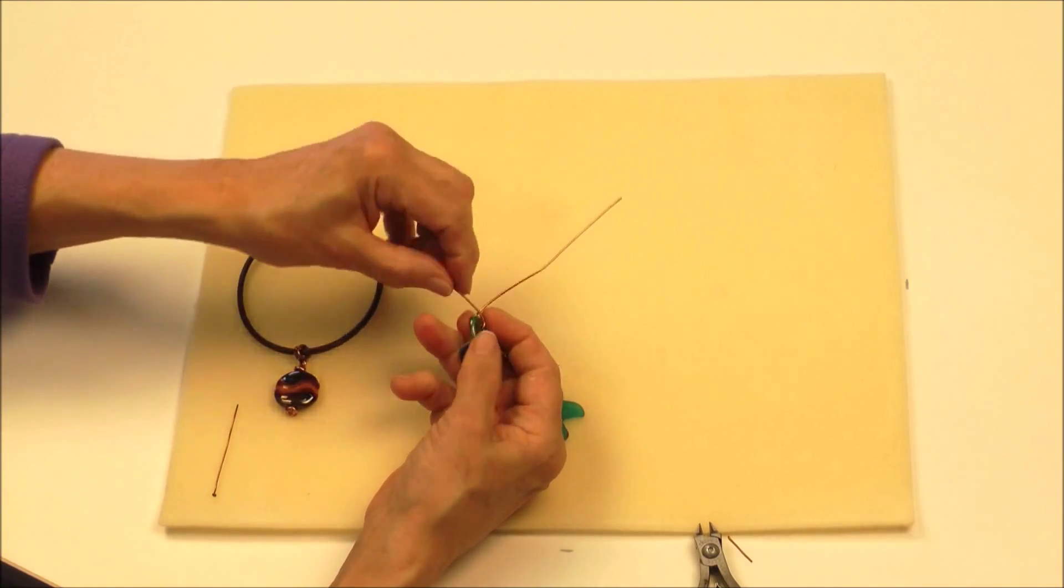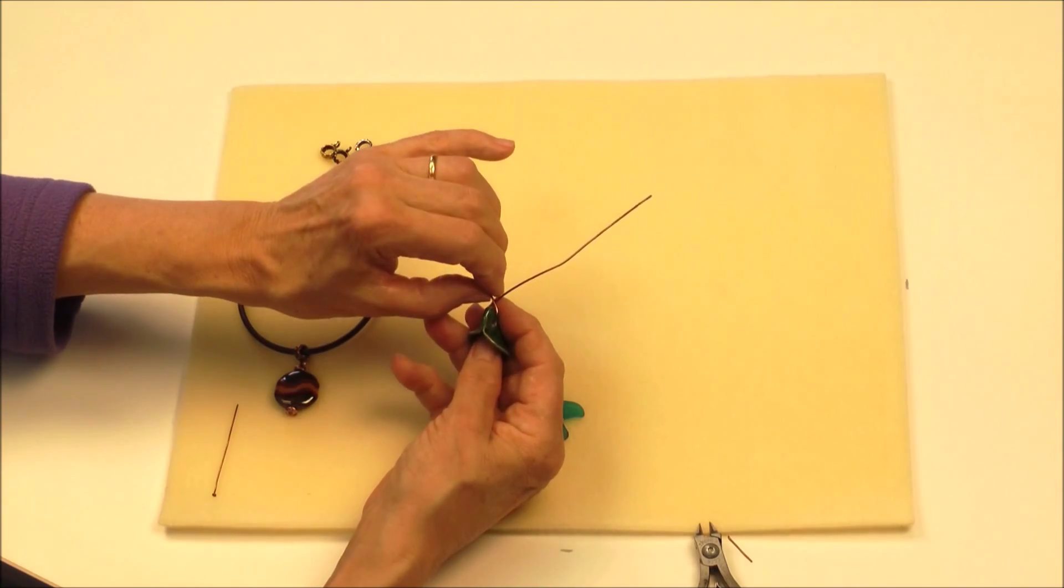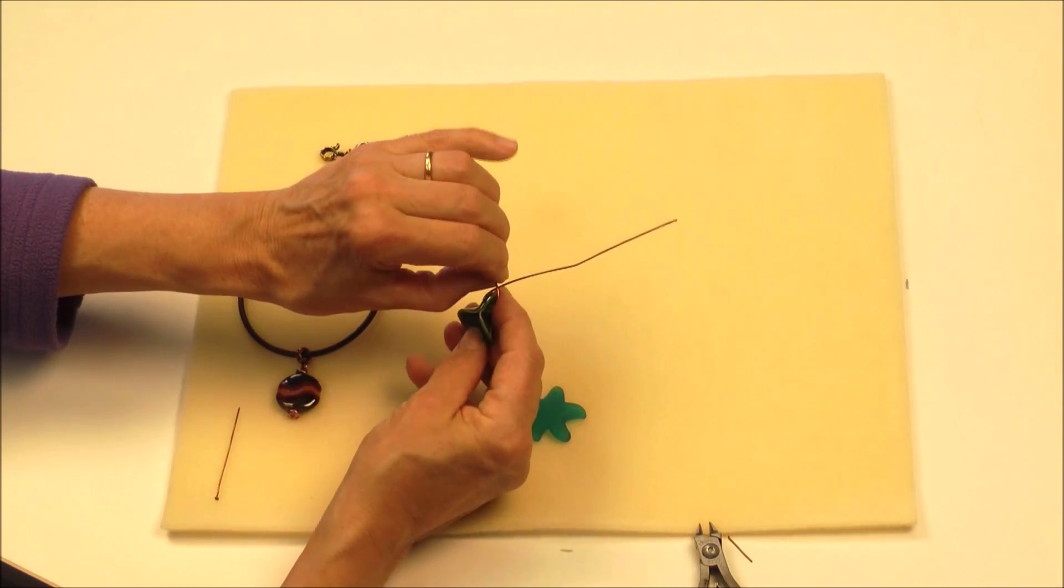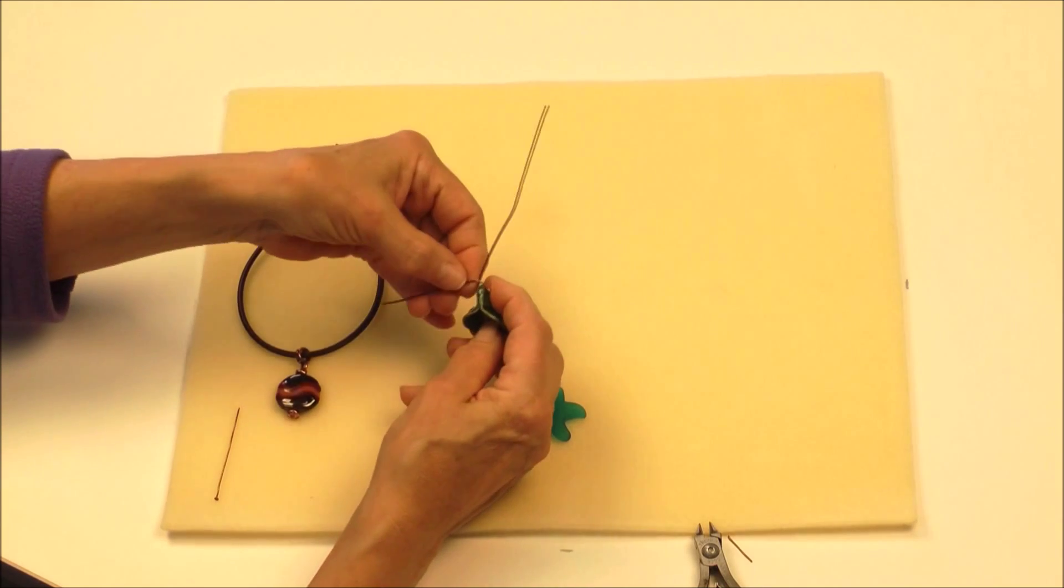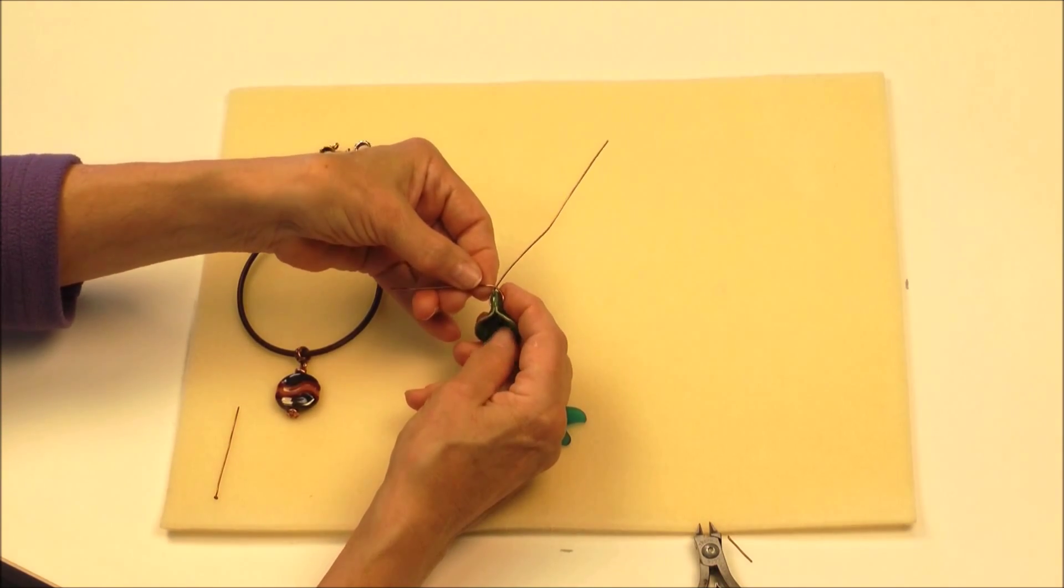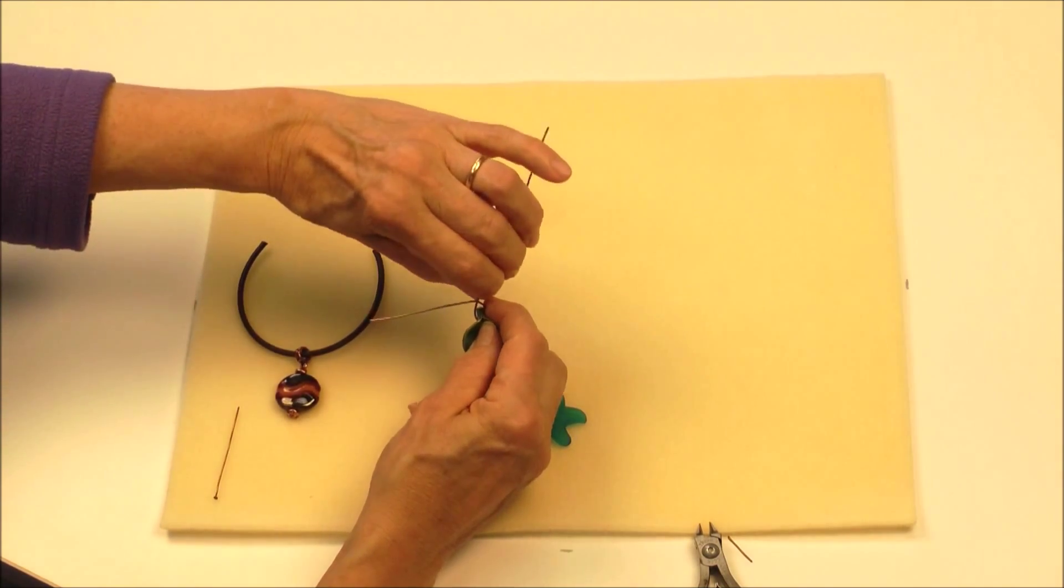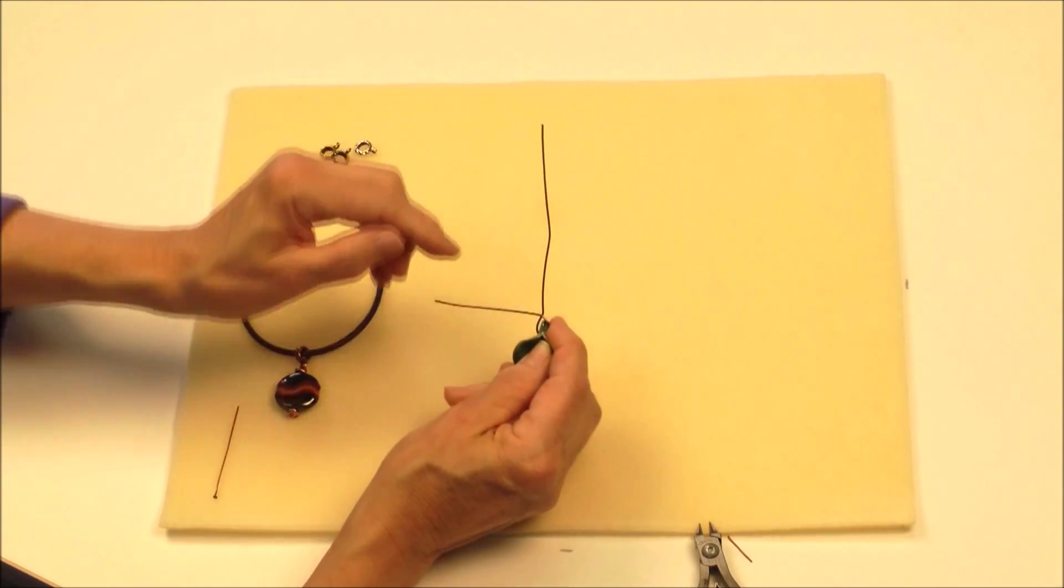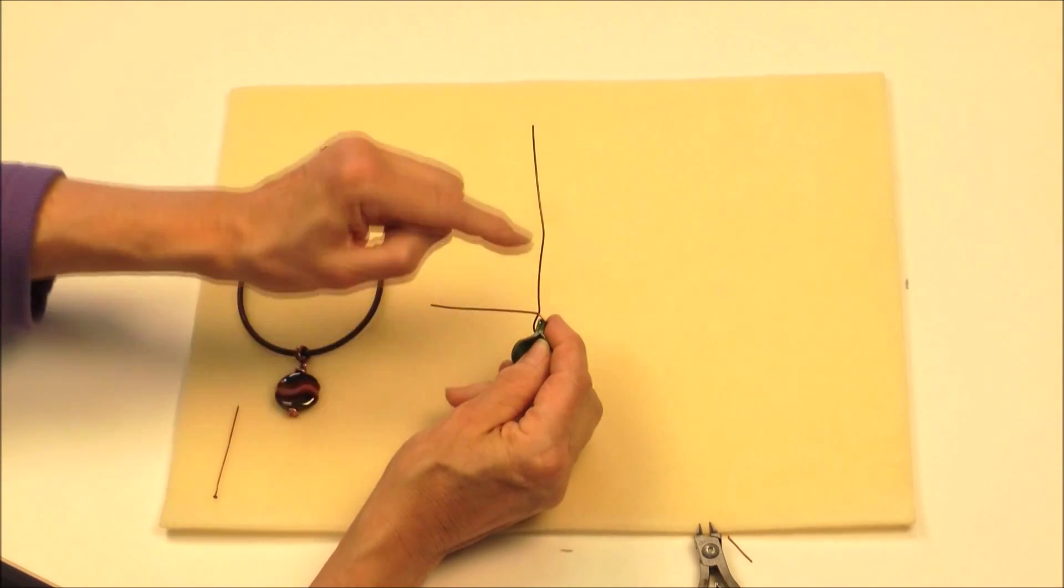And then I'm going to use my fingernail or a pair of pliers. I'm going to take one side and just bend it down where the two wires cross. And then I'll take the other wire and I'm going to bend it straight up. So I have a right angle right in here.